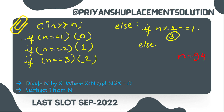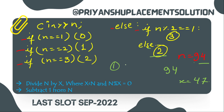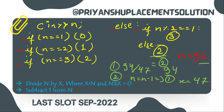For N equal to 94: it fails the first three conditions and moves to else. Since 94 is even, it prints 2. Let's verify: divide 94 by 47, giving 2; then 2 minus 1 gives 1. So two steps — correct.